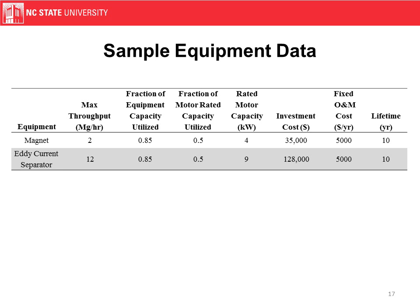Here's some sample data. We see throughput, motor capacity, different utilization factors, cost data, and lifetimes. It's important to note that we can put any values here that we need to. Just because we see similar values for O&M costs and utilization fractions, that is not required by the model.